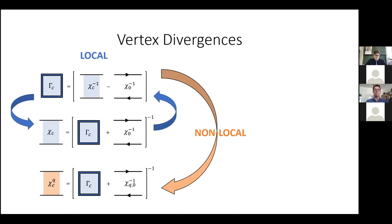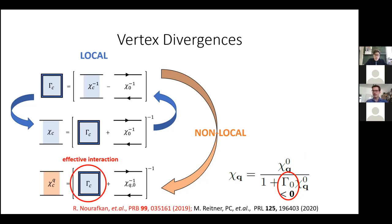What we'll be doing is using the irreducible vertex in a lattice Bethe-Salpeter equation in a DMFT calculation. If you think of an RPA expression for a charge susceptibility as a function of q, you'll note that if the interaction you put in changes sign — becomes negative — you would see an enhancement in the susceptibility. The vertex has many sign changes, as discussed by Alessandro and Georg, and interpreting this irreducible vertex, which turns negative after the vertex divergences, as an effective interaction, we may relate its sign structure to an enhancement in the susceptibility.